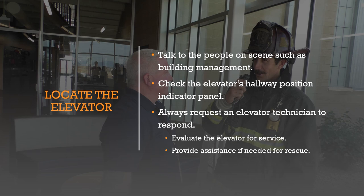The next clue to identify the position of the elevator is the hallway position indicator lights, typically located above the elevator doors on the first floor. The hall position indicator may not be accurate — if the elevator car is stuck between floors, it could give you an inaccurate position — but it should get you in the right area.